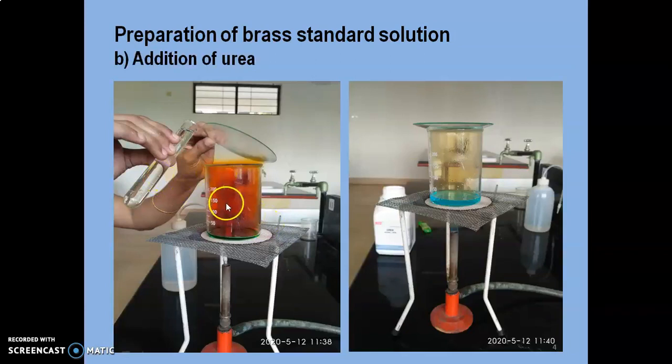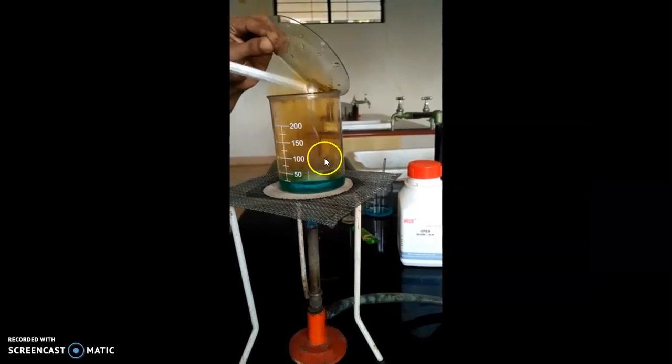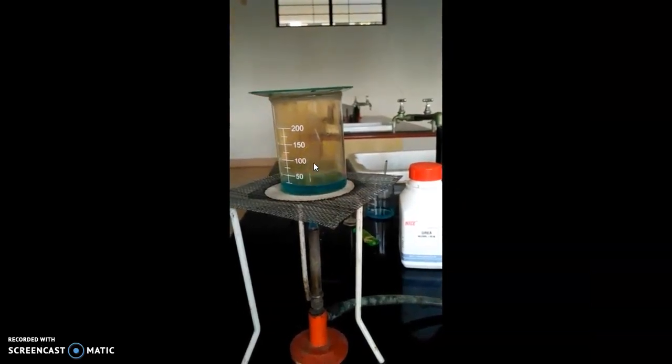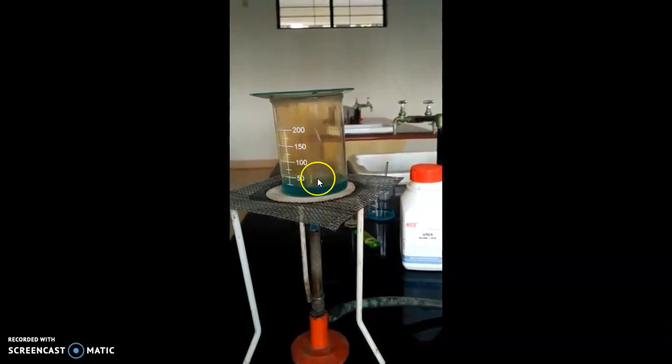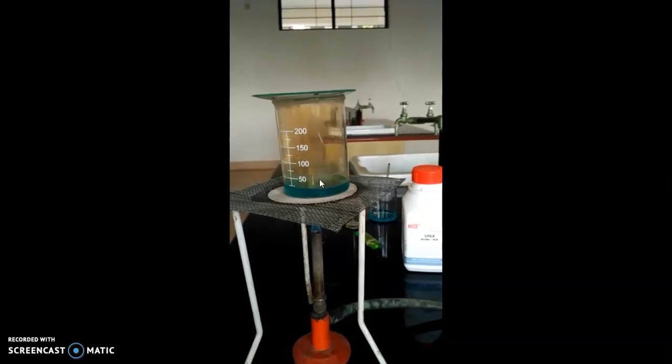Later, one test tube of water has to be added. It has to be heated over the flame. Then, urea has to be added, so that all the nitrous acid will be eliminated away. After the addition, 5 to 10 seconds, it has to be boiled.